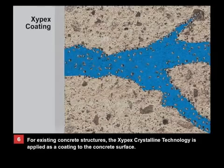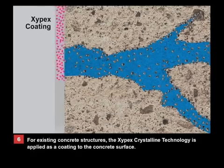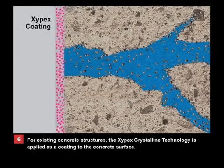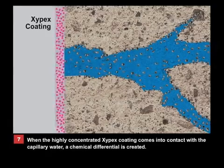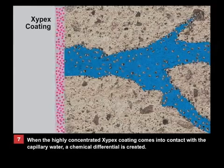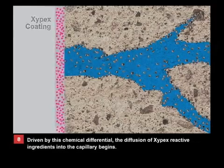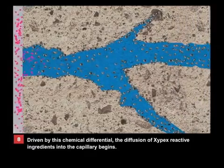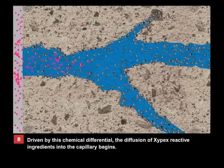For existing concrete structures, the Xypex crystalline technology is applied as a coating to the concrete surface. When the highly concentrated Xypex coating comes into contact with the capillary water, a chemical differential is created. Driven by this chemical differential, the diffusion of Xypex reactive ingredients into the capillary begins.